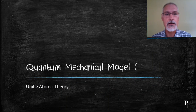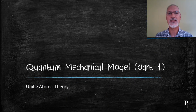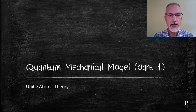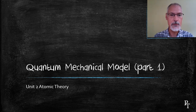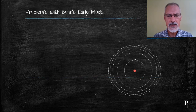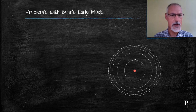Today we're going to leave Bohr's model of the atom and take a look at what's called the quantum mechanical model of the atom. I'm going to take it into two programs, so today we'll look at part one. First off, let's begin with some problems that plague Bohr's model.